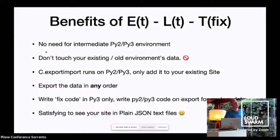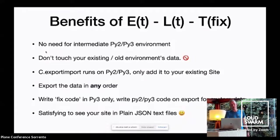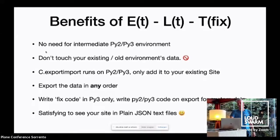You can just say: we've only got five or six collections in this old site — why put in all the work and possible risks if we can recreate those collections in 10 minutes on the destination site? If you have a content type with a completely new Dexterity implementation and it's only three or four items, you can choose not to export and import them, but just create them when the site is done. And it's very satisfying to see your site in plain text files.